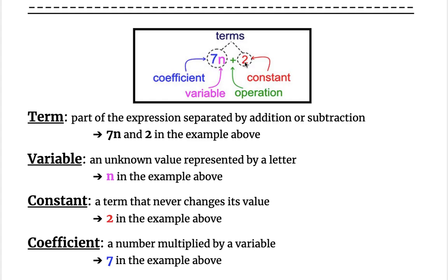A variable is an unknown value represented by a letter. So in this example of an algebraic expression, the variable is n.